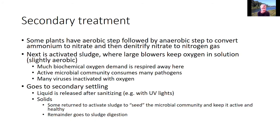In secondary treatment, some plants have an anaerobic step followed by an aerobic step right at the beginning. This converts ammonium to nitrate via nitrification, and then denitrification reacts the nitrate with organic carbon so that the nitrate goes away as nitrogen gas into the atmosphere. This is one way to remove nitrogen at the beginning of the system; other methods happen at the end in tertiary treatment.